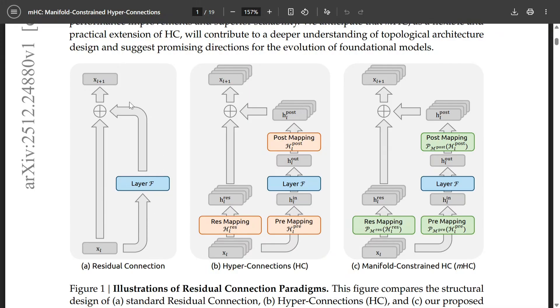Now there's another thing called hyper connection. In case of residual connection it's quite constant - you're not adding much. In case of hyper connection, you are adding an entire network. As you can see on the right-hand side, pre-mapping and post-mapping is happening, multiple functions are getting added.